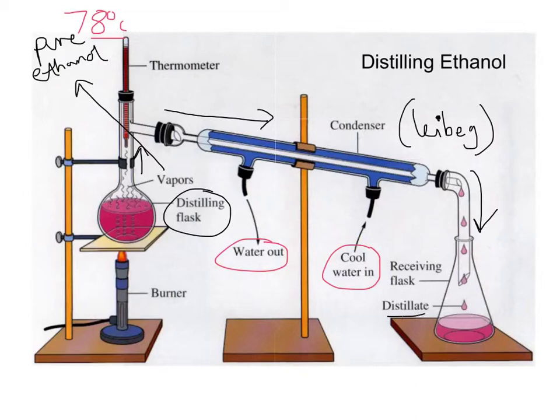And what you end up producing is called a distillate. So what we're able to do is get out of our water and ethanol solution, our pure ethanol.